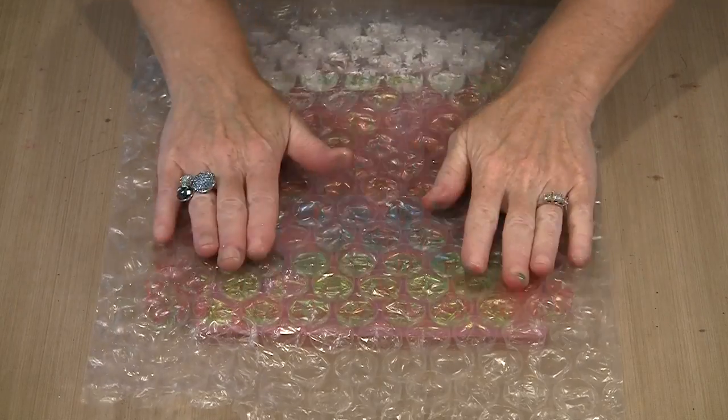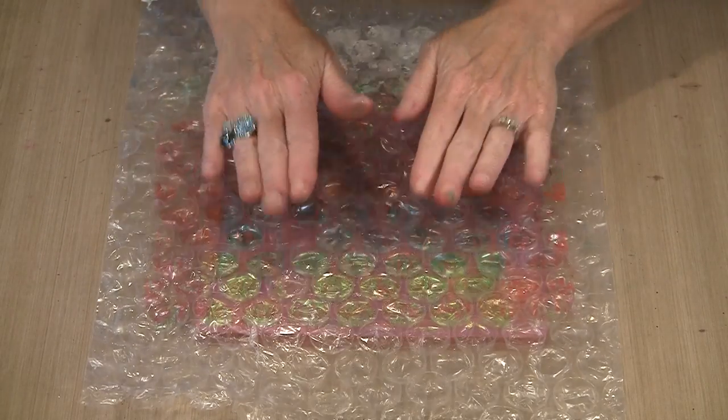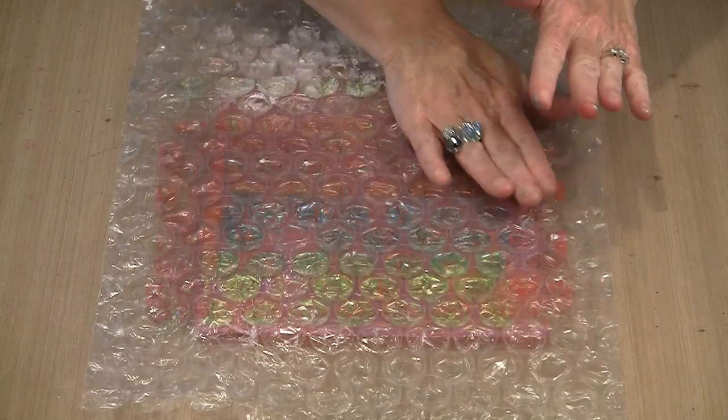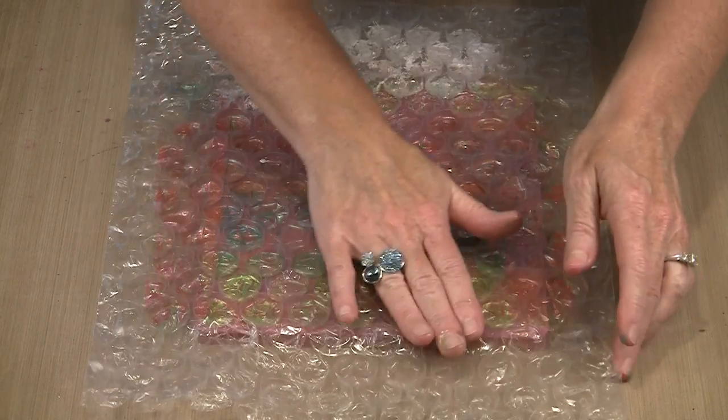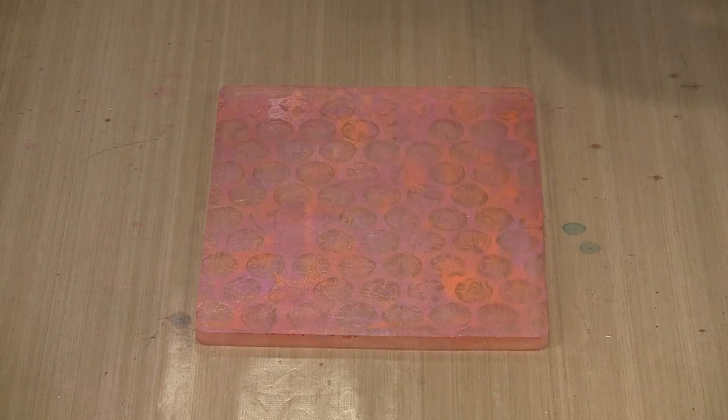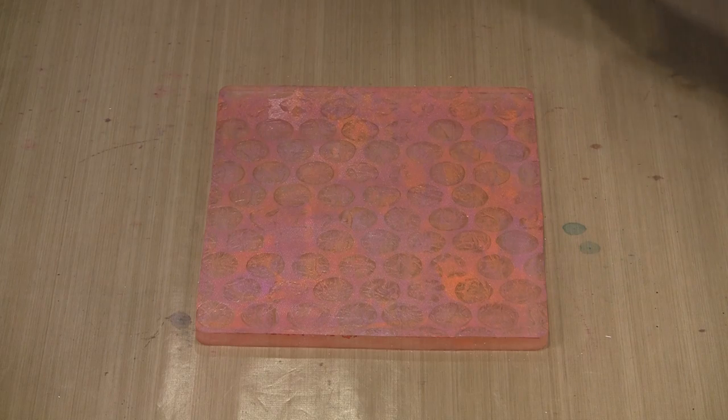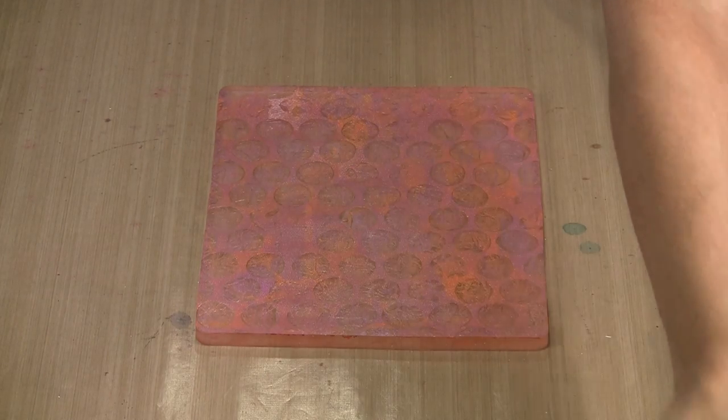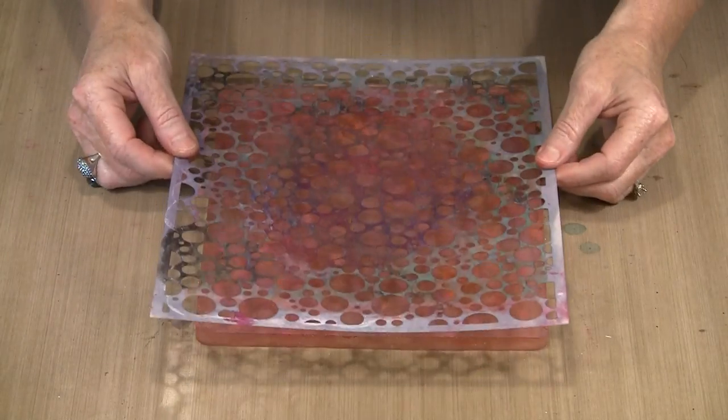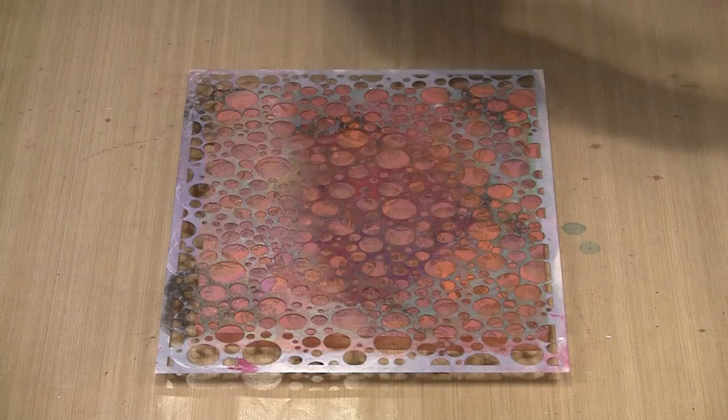So this is a piece of big bubble wrap. And I like it because this is an 8 by 10 plate. So proportionally the size of the bubbles works with the size of the plate. Now that I have gone ahead and pulled that off, what I want to do is bring in this is our bubble blast stencil. So we have got bubbles on top of bubbles.